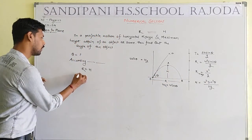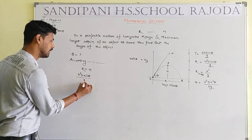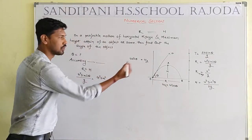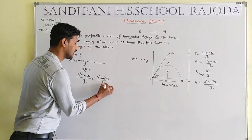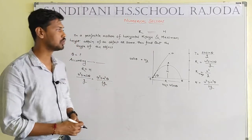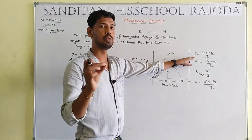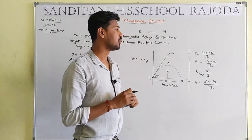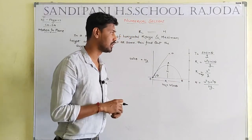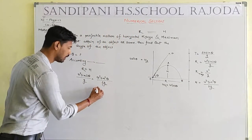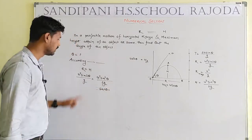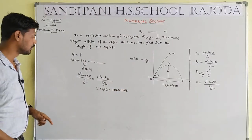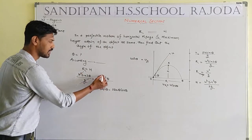According to the condition of the question, R = H. We know R = u² sin2θ / g and H = u² sin²θ / 2g. From the derivation, T = 2u sinθ / g. For the trigonometric identity: sin2θ = 2 sinθ cosθ. Setting R = H, g cancels and u² cancels from both sides.